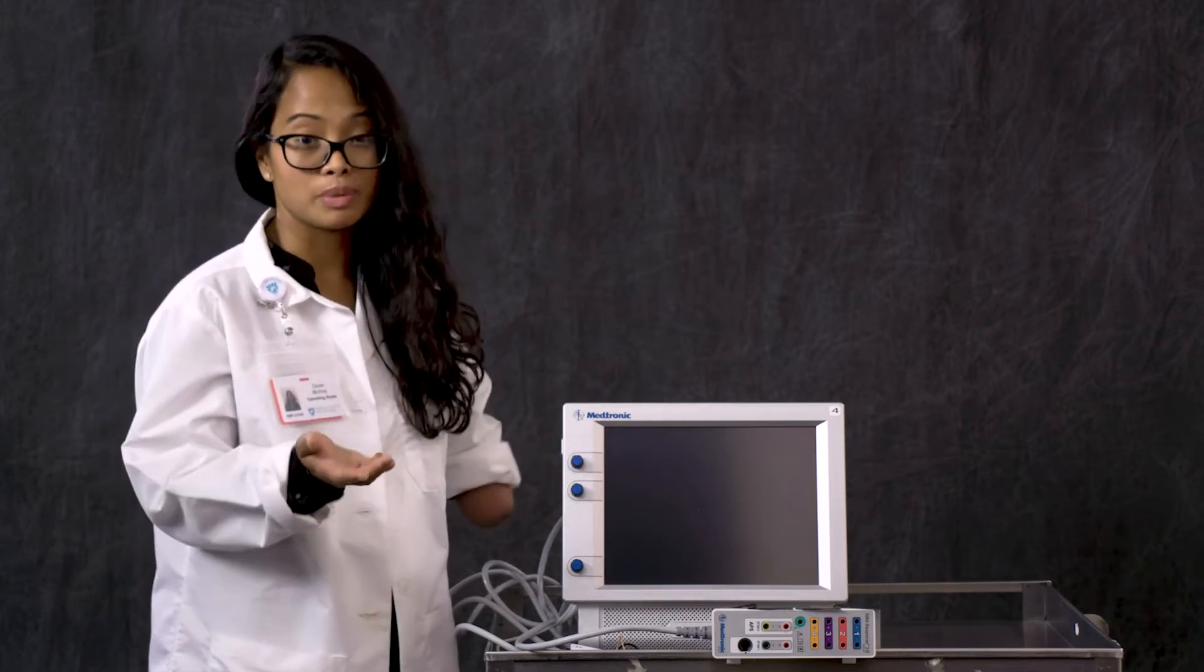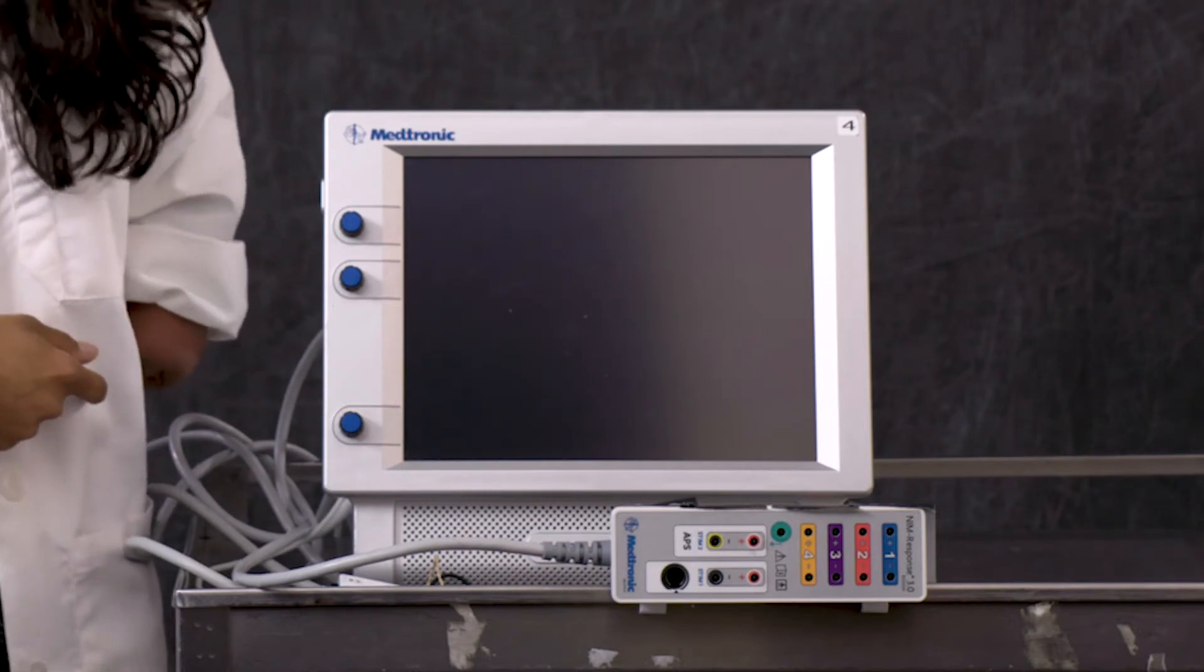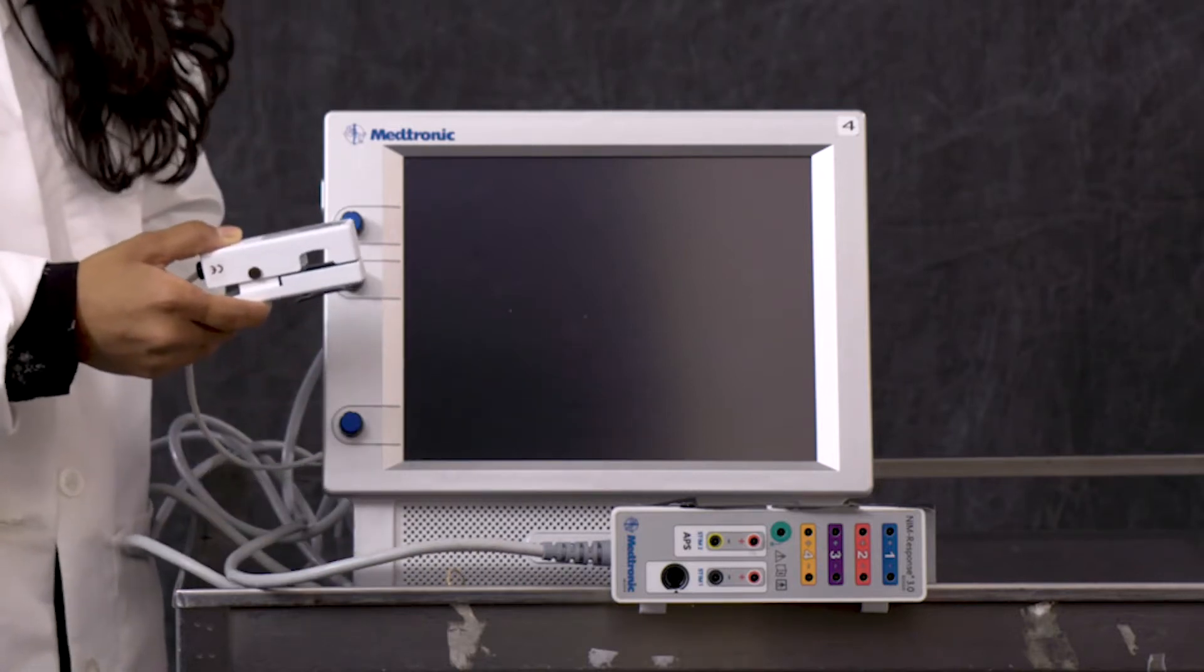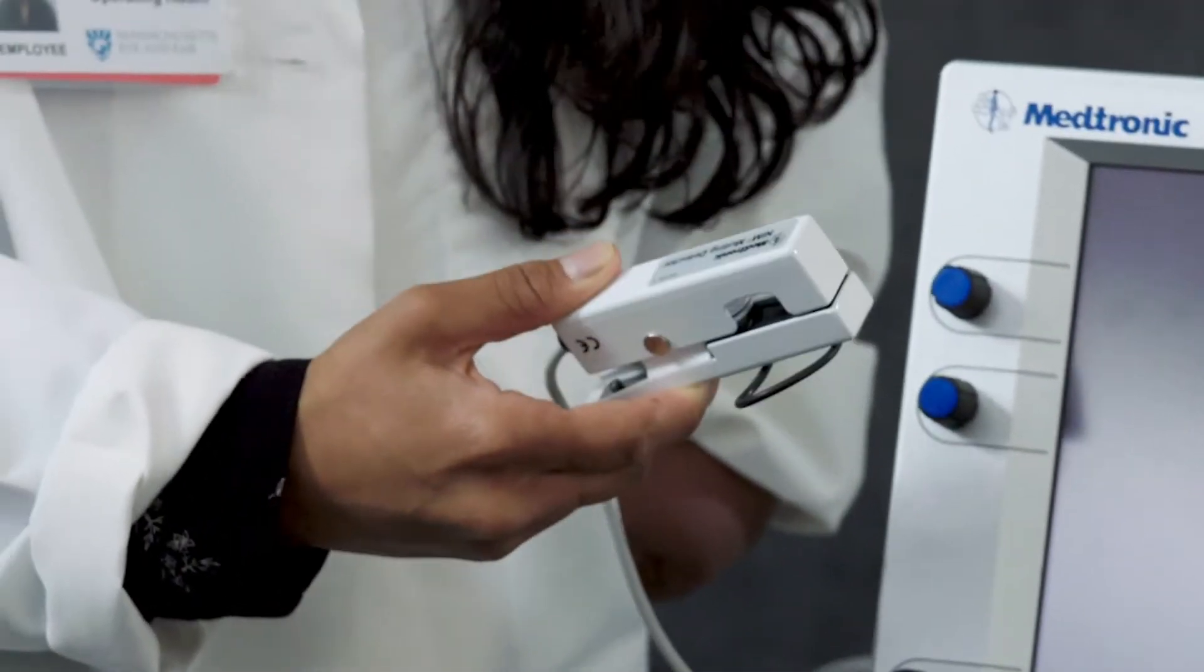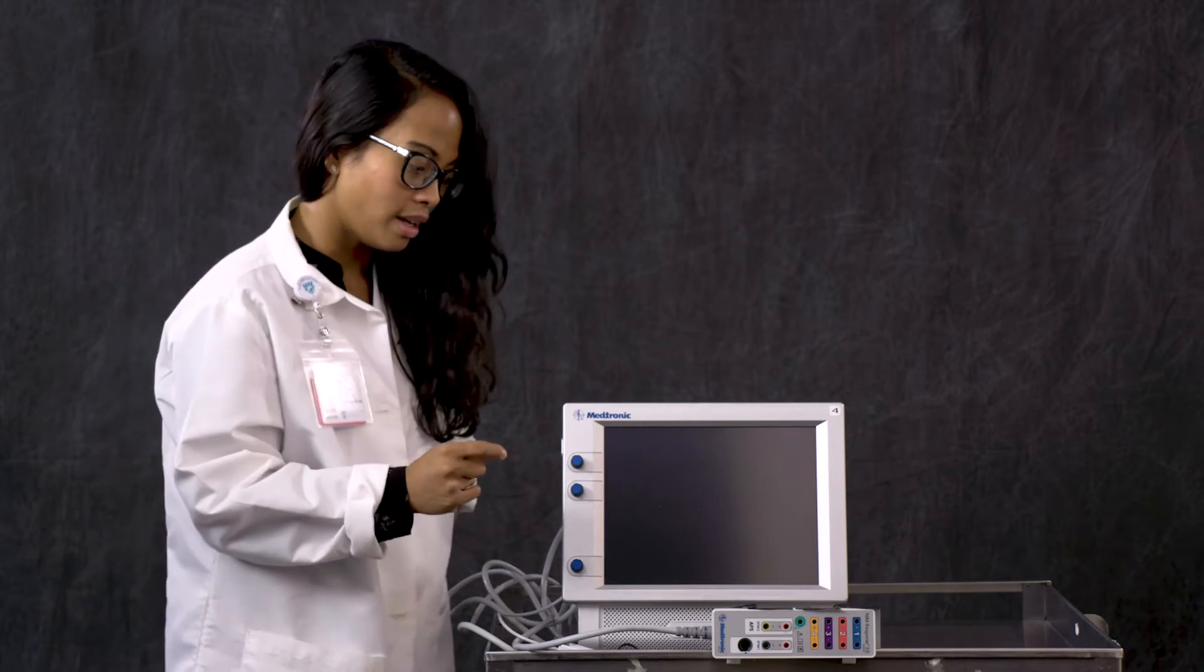The three main things that we need would be our EMG console sponsored by Medtronic, a patient interface cable box where the electrodes plug in, and our muting detector probe or cable. This wraps around the electrocautery during surgery and mutes all that electrical noise or artifacts. It makes things a lot easier.